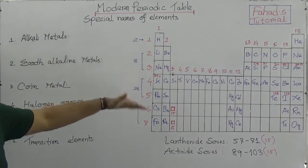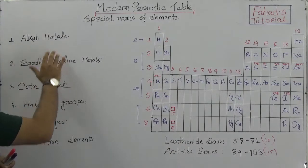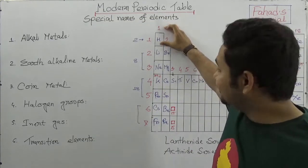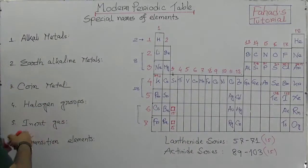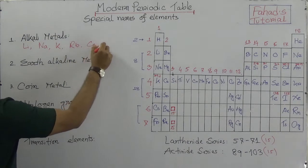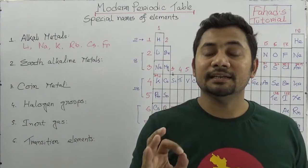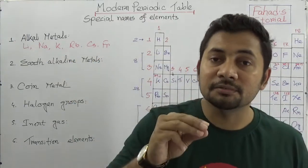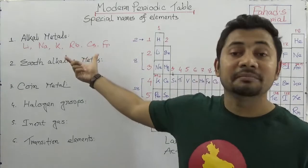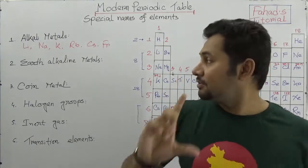In this periodic table we have seven periods and eighteen groups, and there are different groups which have some special features and characteristics. In group one, except hydrogen, there are six metals: lithium, sodium, potassium, rubidium, cesium, and francium. Without hydrogen, these six metals are known as alkali metals. Group one is known as alkali metals because these elements are soluble in water, and when dissolved in water they produce hydrogen ions and alkali. As they produce alkali and are metals, they are called alkali metals.